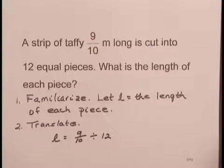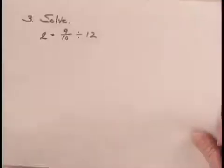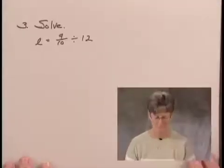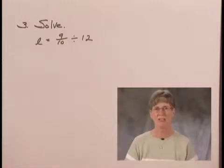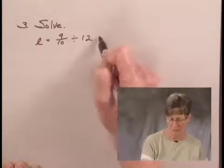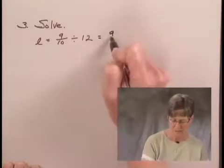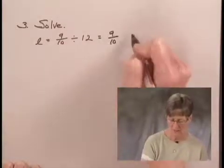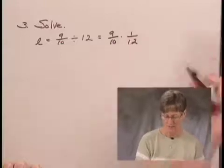The next step in the process is to solve the equation. Remember, we have L equals 9 tenths divided by 12. To do the division, I'm going to multiply by the reciprocal of 12. So this is 9 tenths times 1 twelfth.